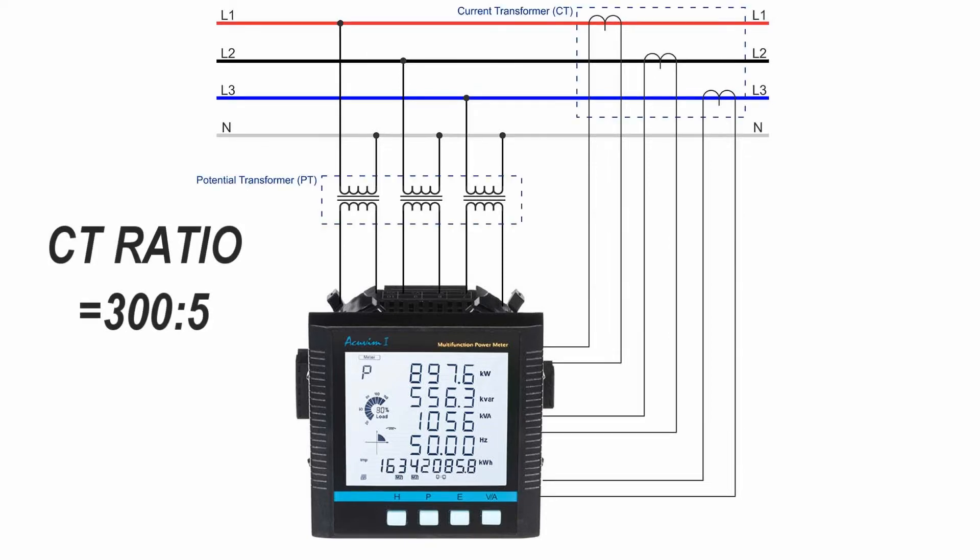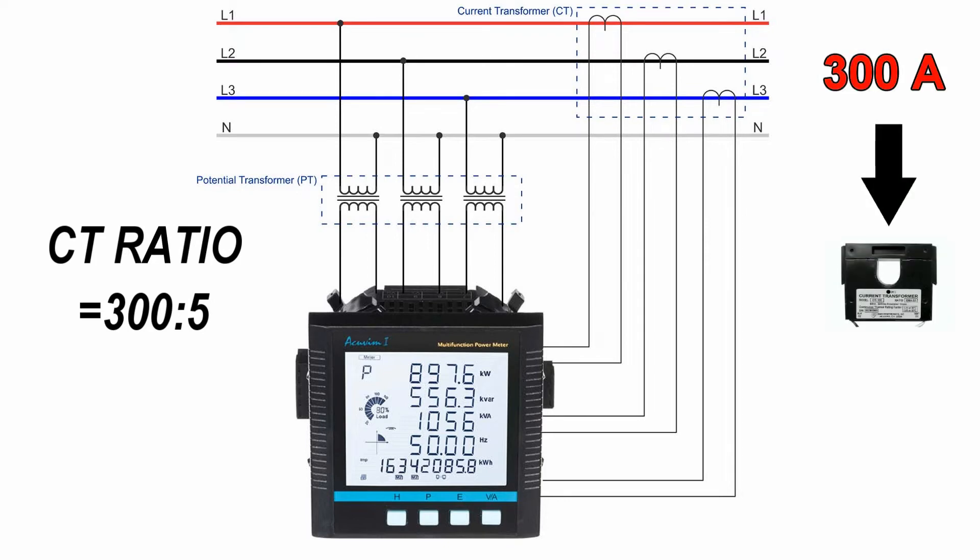For example, if a CT has a ratio of 300 to 5, it means that when the CT sees 300 amps of current from the grid, it will output 5 amps to the meter and PTs work the same way.